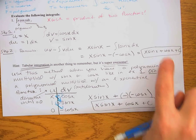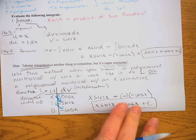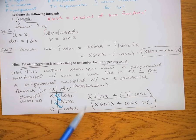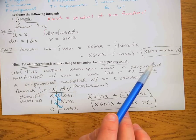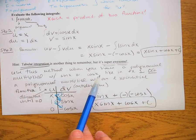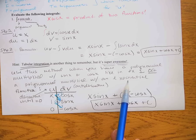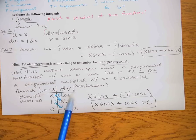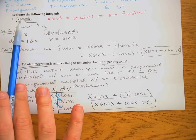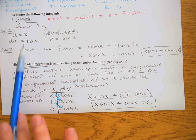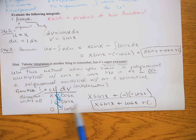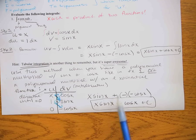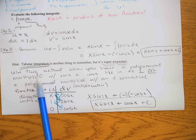The result is x·sin(x) + cos(x) + C — the exact same answer as before. All the work is just this little table. If the polynomial were a higher degree, the long method might require four, five, or six integration by parts steps, whereas tabular method just needs the table and then the answer.